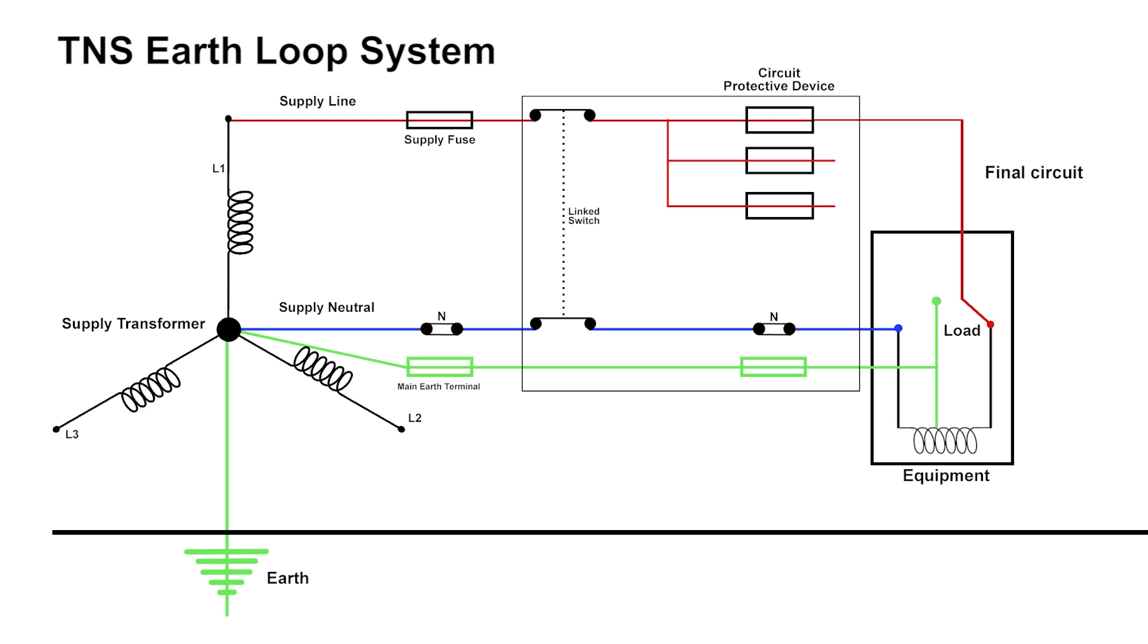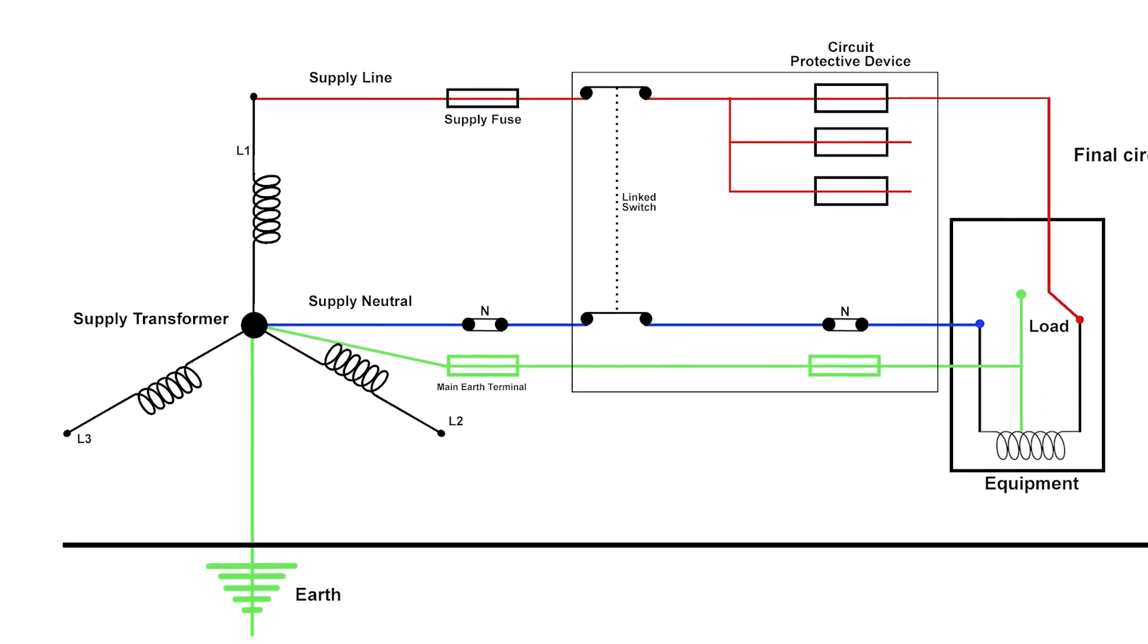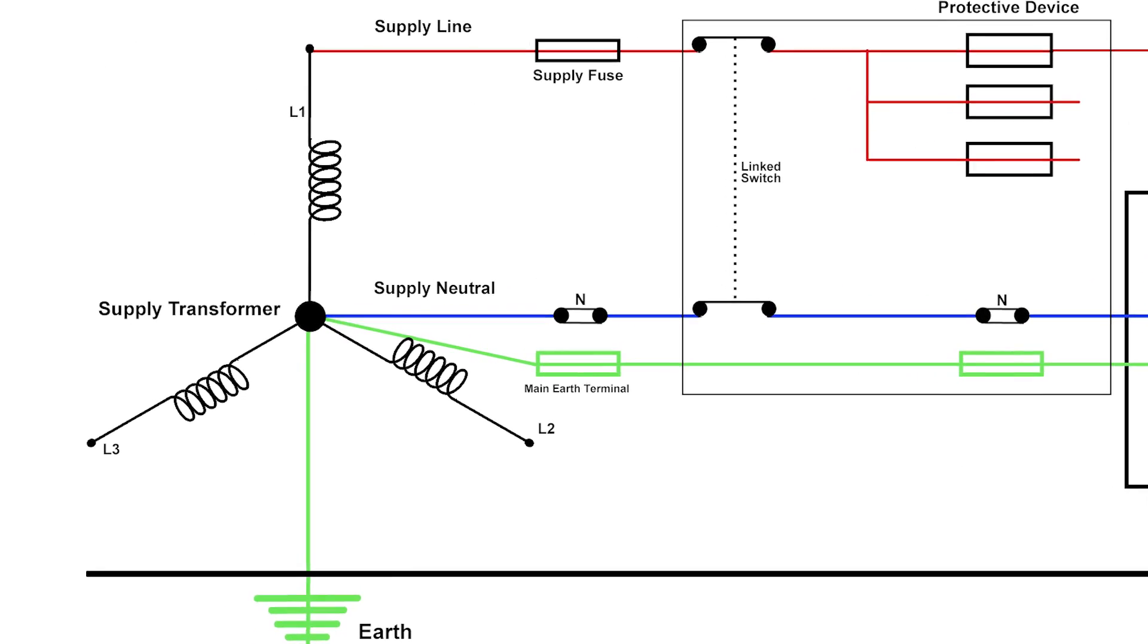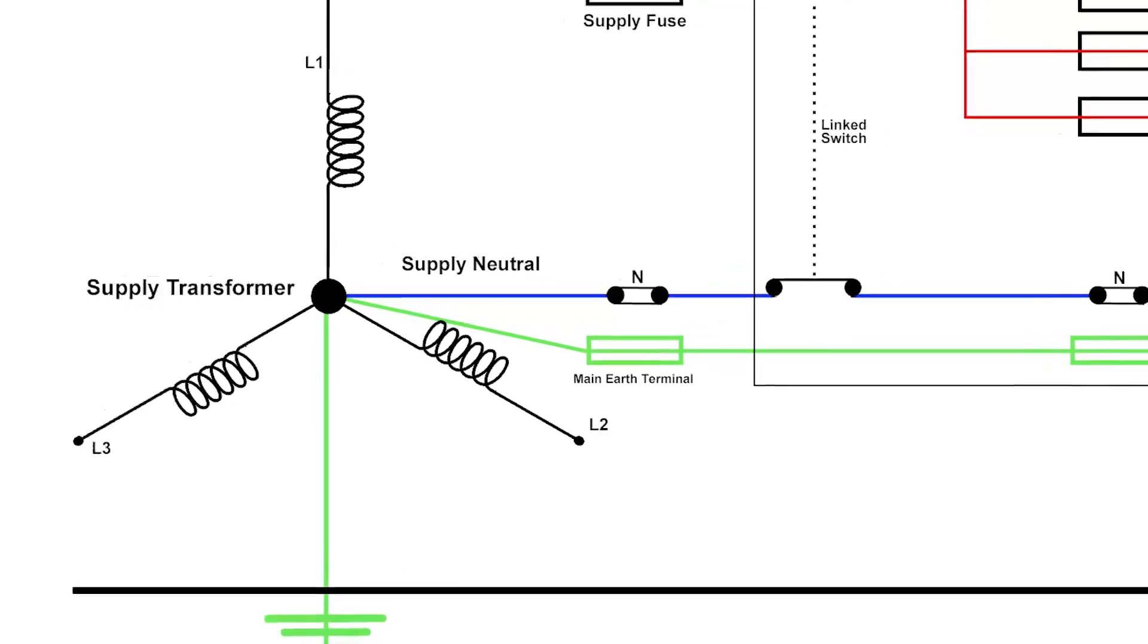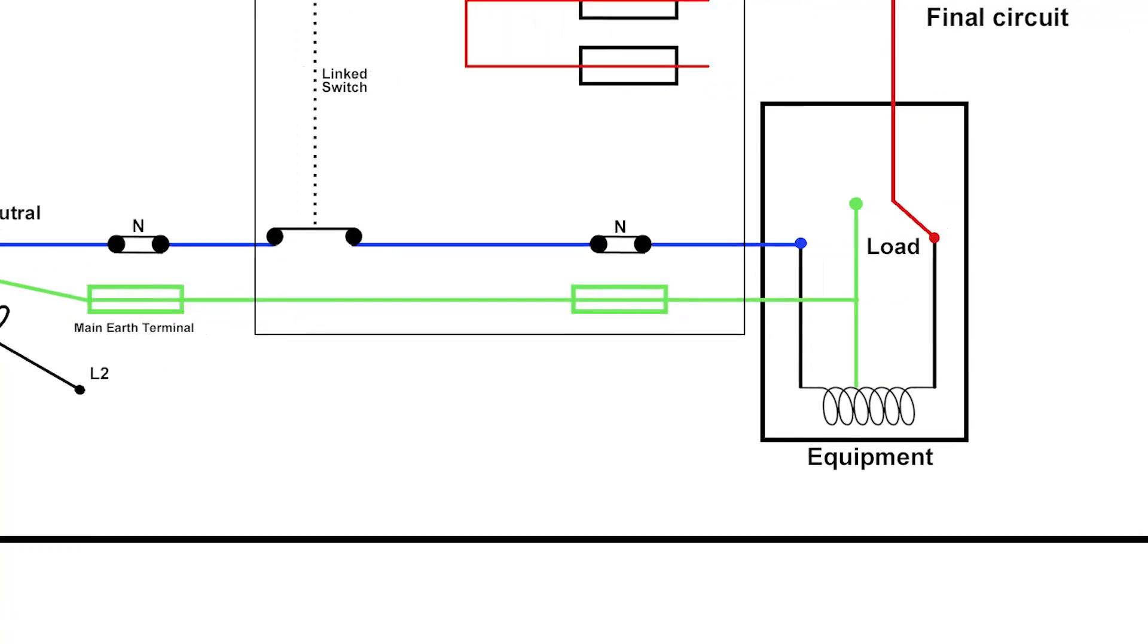The drawing we're looking at is just a diagram of a TNS system. When we talk about earthing systems, the T would always stand for earth. N in this case is neutral, and S means that the neutral and the earth are entirely separate throughout the whole of the installation. In other words, they're separate from the supply transformer right through to the final circuit.